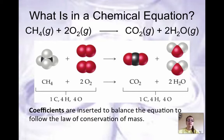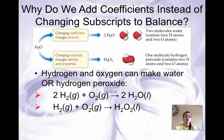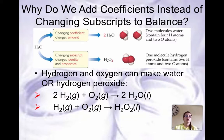Subscripts tell us the number of atoms — they are two different things. To illustrate the idea of adding coefficients instead of changing subscripts, consider the example of water. Hydrogen and oxygen can make water or hydrogen peroxide. If you need to change the amount of oxygens to balance the equation, you add a two in front of the water — giving two moles instead of one. If you change the subscript of oxygen, you now have hydrogen peroxide, a completely different compound. That's why you focus on coefficients and cannot change subscripts to balance.